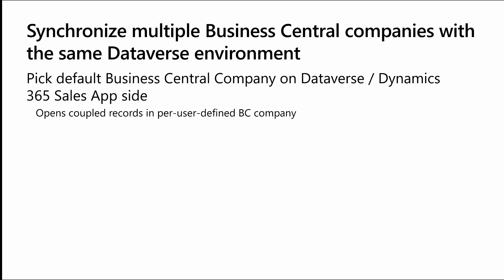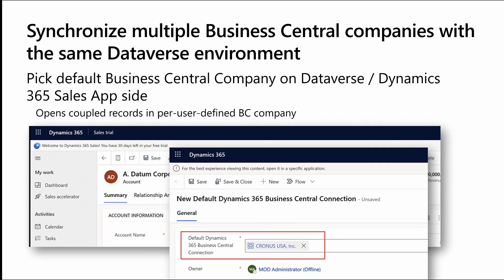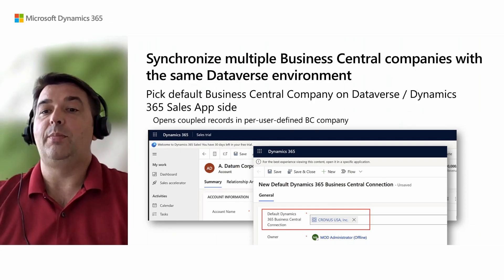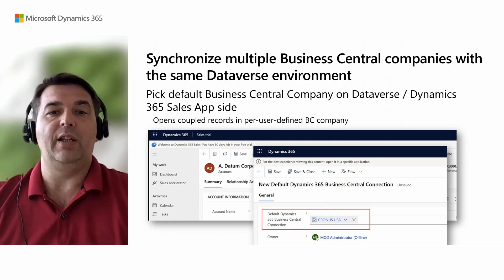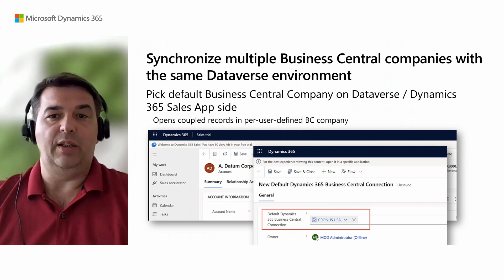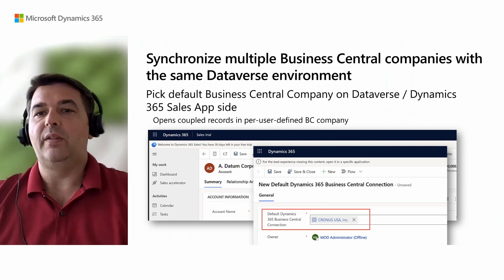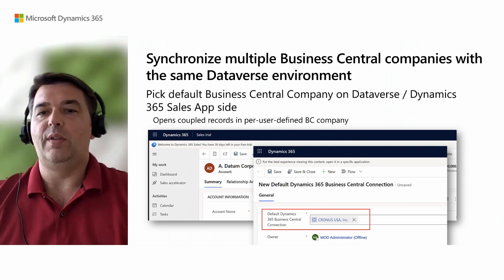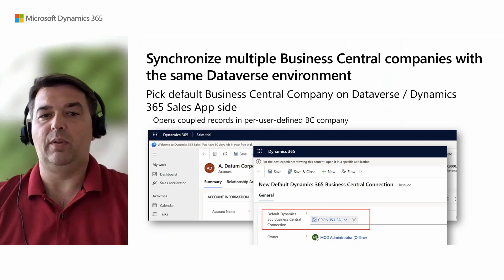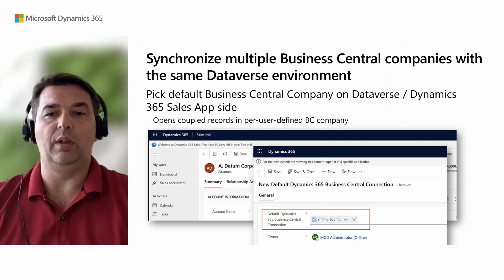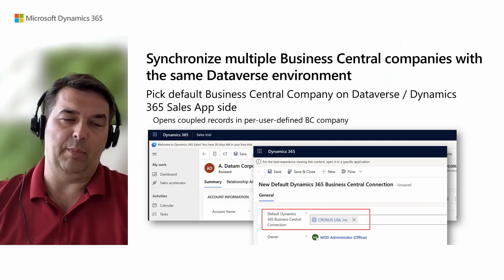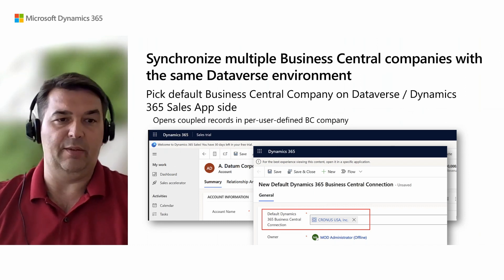Users can now pick and change the default Business Central environment and company that will be used to open coupled records from Dynamics 365 for Sales in Business Central. This information is preserved as a per-user setting but can be changed anytime by the user. This is mainly to avoid users having to pick a Business Central company every time they need to open a coupled record in Dynamics 365 for Sales or Dataverse.